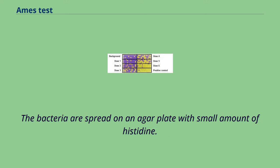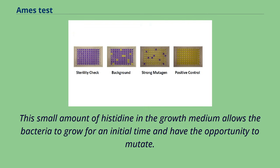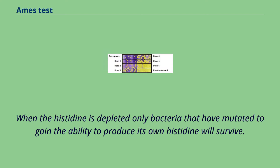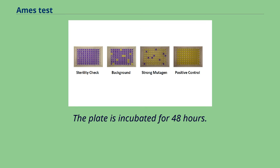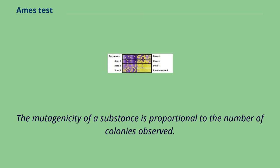The bacteria are spread on an agar plate with a small amount of histidine. This small amount of histidine in the growth medium allows the bacteria to grow for an initial time and have the opportunity to mutate. When the histidine is depleted, only bacteria that have mutated to gain the ability to produce their own histidine will survive. The plate is incubated for 48 hours. The mutagenicity of a substance is proportional to the number of colonies observed.